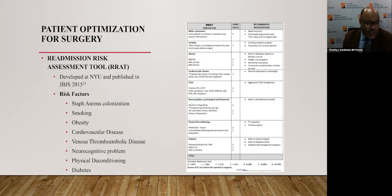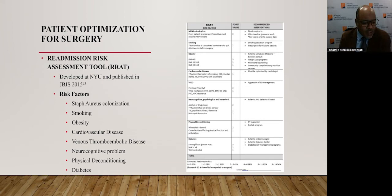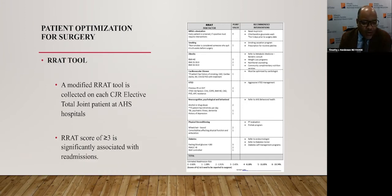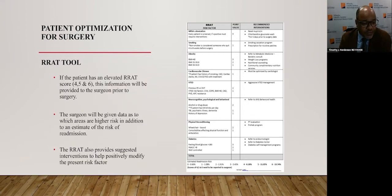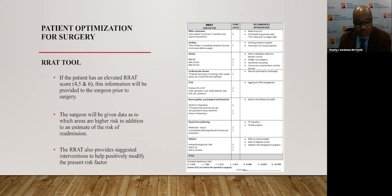At AHS, we use the Readmission Risk Assessment Tool — the RRAT — developed at NYU and published in the JBJS in 2015. It includes risk factors such as staph aureus colonization, smoking, obesity, cardiovascular disease, venous thromboembolic disease, neurocognitive problems, physical deconditioning, and diabetes. The modified RRAT tool is collected on each CJR elective total joint patient at AHS hospitals. An RRAT score greater than 3 is significantly associated with readmission. If the patient has an RRAT score of 4, 5, or 6, this information will be provided to the surgeon prior to surgery, including which areas are higher risk and an estimated risk of readmission. The RRAT also provides suggested interventions to help positively modify the present risk factor.